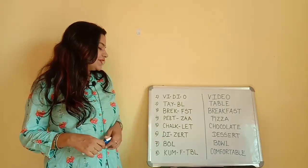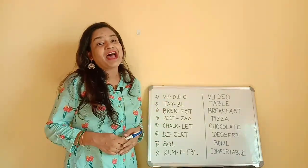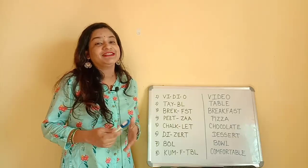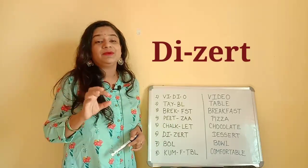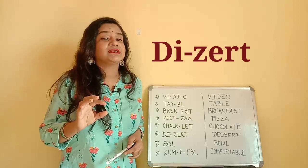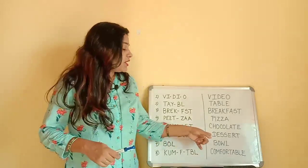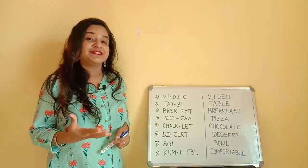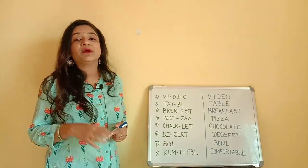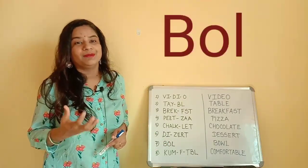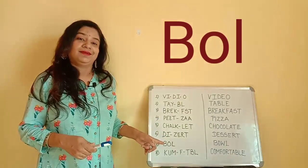Coming to the sixth word: the dish which we generally have after dinner, that is dessert. The correct pronunciation is 'dessert', it is not 'dessert'. Where do we serve the dessert? We serve it in a bowl. It is not 'bowel', it is 'bowl'.